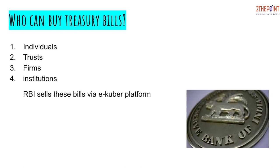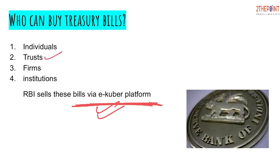Any individual can buy Treasury Bills through the RBI's e-Kuber platform and through auctions conducted by RBI. Apart from individuals, trusts, firms, institutions, and financial banks — all of these can also purchase Treasury Bills.